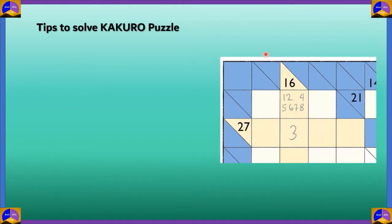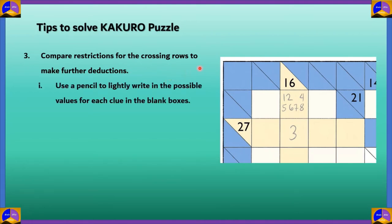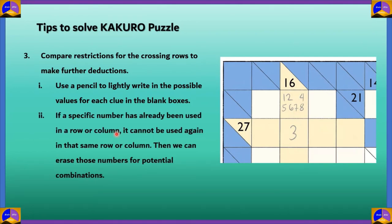Another important tip to solve a Kakuro puzzle. Compare the restrictions for the crossing rows and columns to make further deductions. For that, you have to use a pencil to lightly write in the possible values for each clue in the blank boxes. For example, here. Just write values lightly if you have multiple options and then after solving other rows and columns, you'll eventually get to a stage where you can eliminate some of these options in order to get to the right one. If a specific number has already been used in a row or column, it cannot be used again in that same row or column. Then, we can erase those numbers for potential combinations.